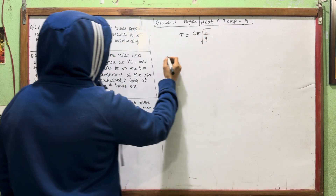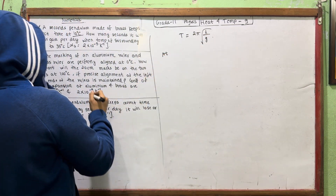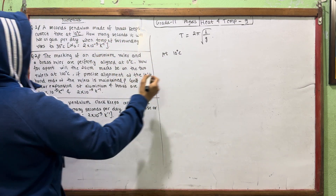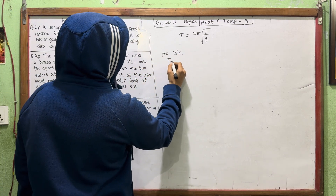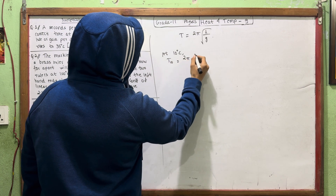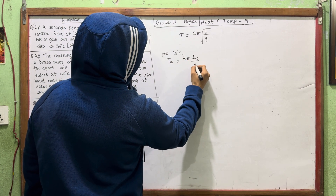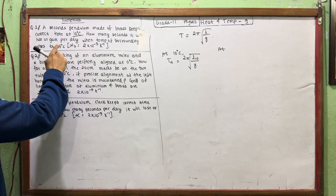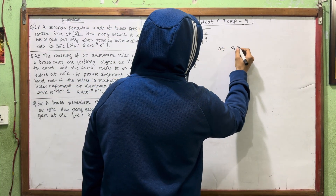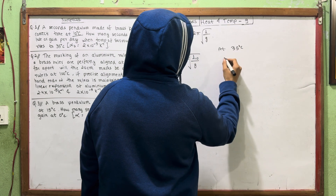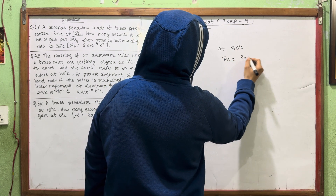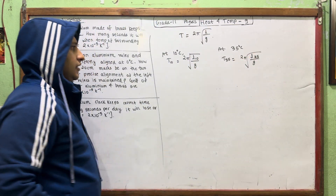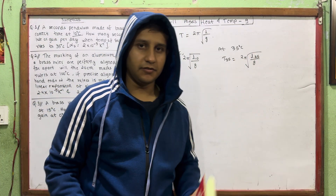At 10 degrees Celsius, the formula gives T10 = 2π√(L10/G). At 35 degrees Celsius, T35 = 2π√(L35/G). We need to find T35 divided by T10 by substituting the thermal expansion formula.